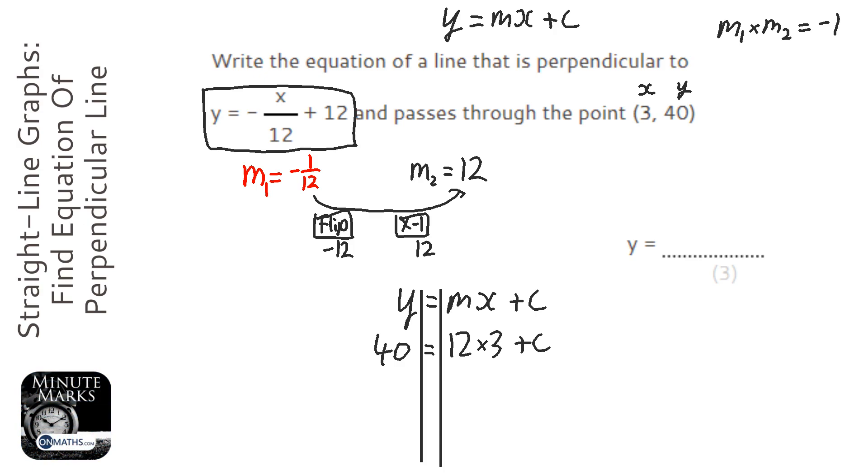Okay, so we've got to take away 36 from both sides, and I'm just going to swap them around, so we've got c equals 40 take away 36, which is 4. So our final equation is y equals 12, which is the gradient, x plus 4.